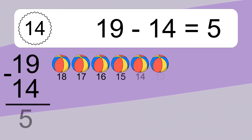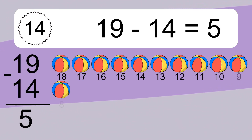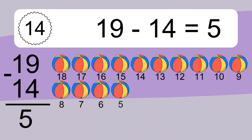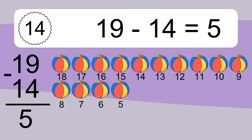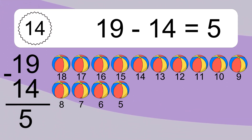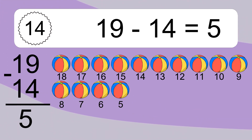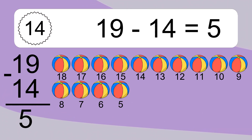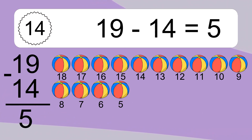19 minus 14 equals what? 19 minus 14 equals 5. Let's count it: 18, 17, 16, 15, 14, 13, 12, 11, 10, 9, 8, 7, 6, 5.